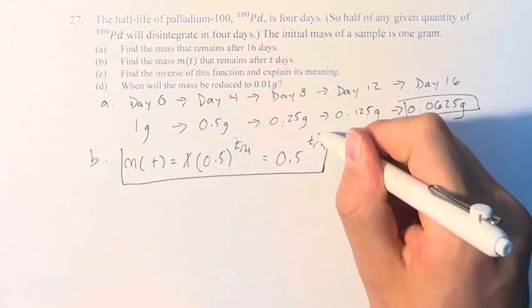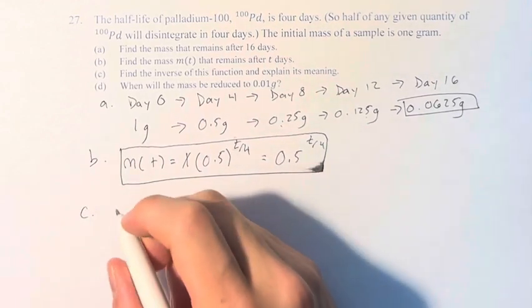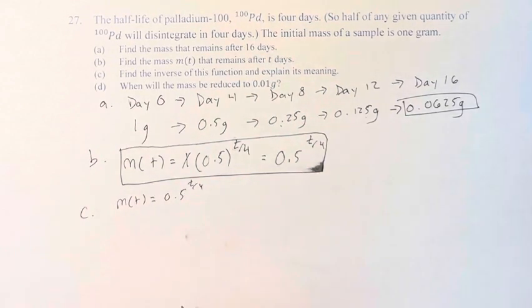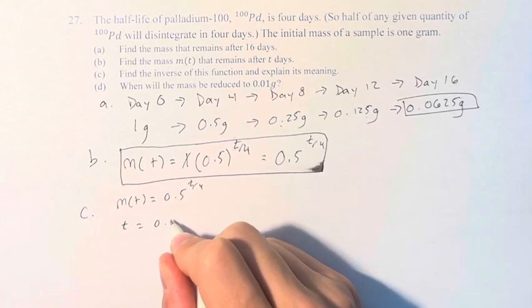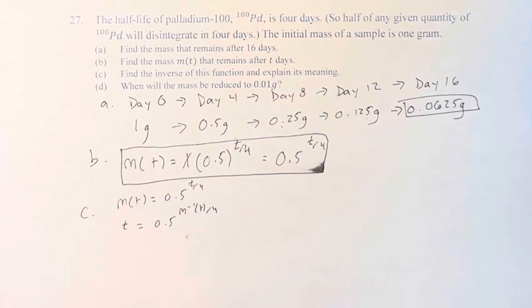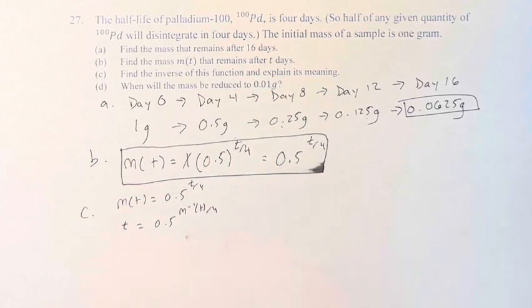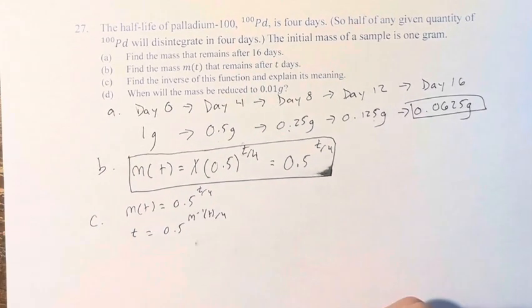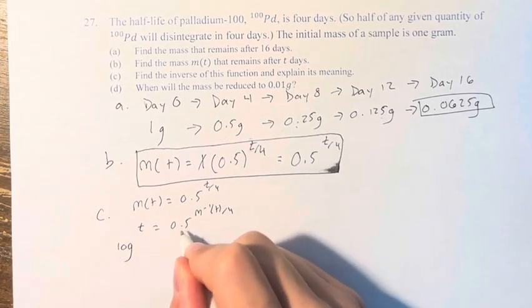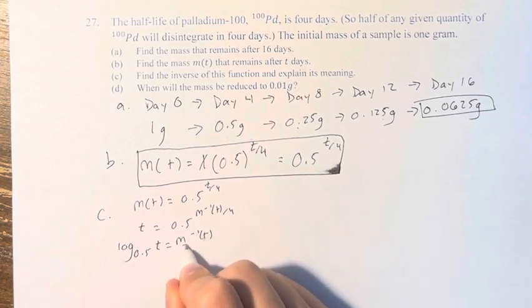We are asked to find the inverse of this function. So if m(t) equals 0.5 to the t over 4, then we have to swap the variable and the function to find the inverse. We have an exponential here. We want to get this function out of the exponent. So we turn this into log base 0.5 of t equals the exponent, the inverse function over 4.